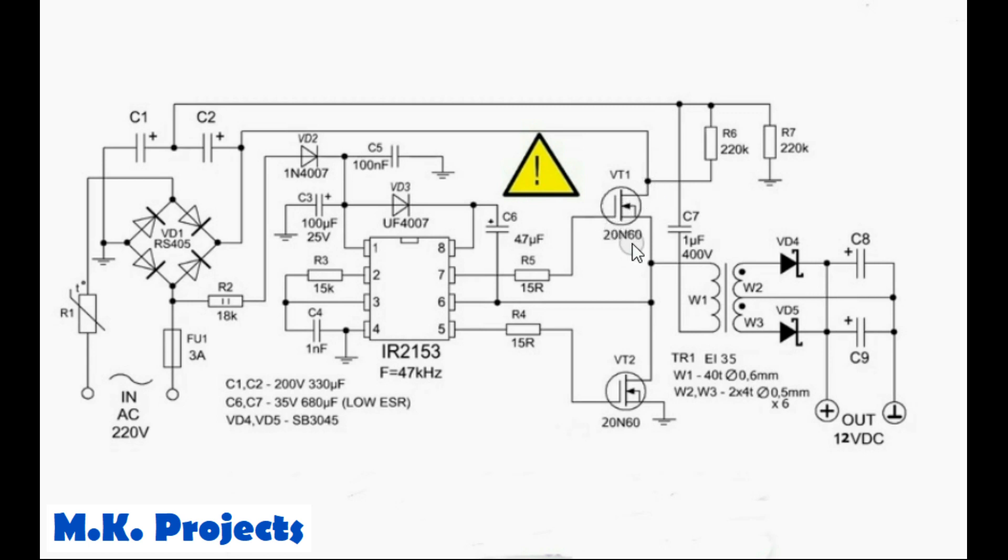For the MOSFETs, use 20N60 power MOSFETs. They can handle 600 volts and 20 amperes comfortably, so they should work well without any problems. This is the pass capacitor - it should be non-polarized and have a voltage rating of about 400 volts or more. For the transformer, I used a ferrite core transformer. Ensure it has a sufficient cross-sectional area.